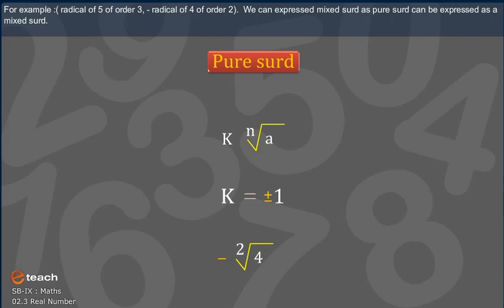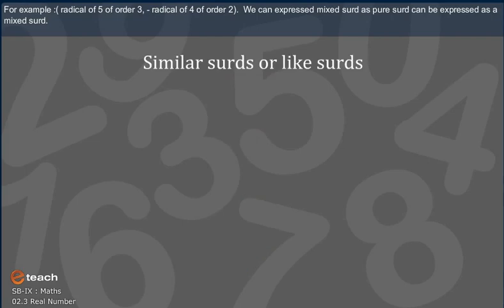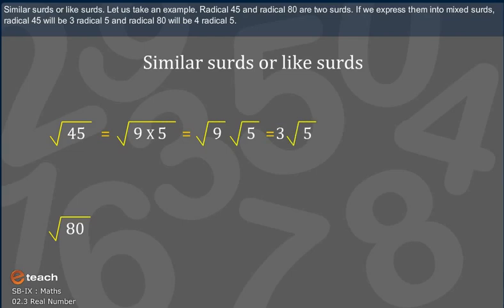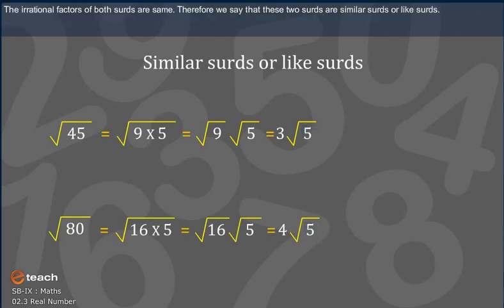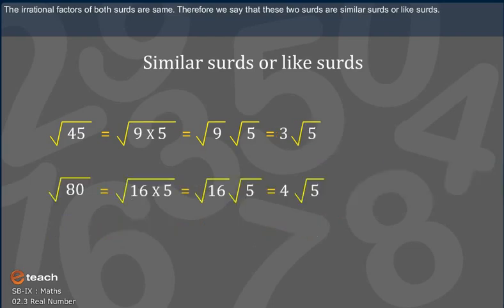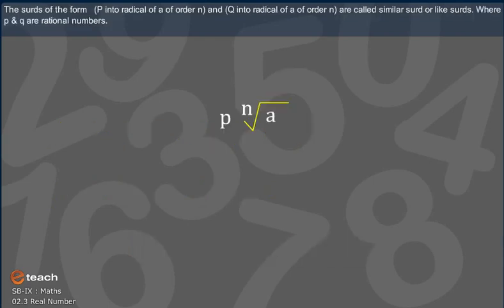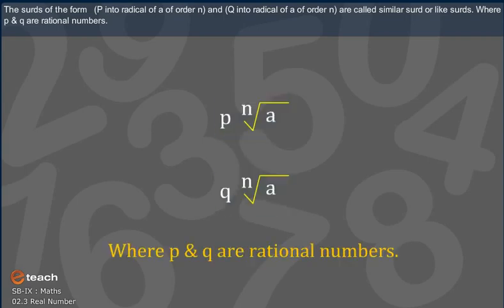We can express a mixed surd as a pure surd, and a pure surd can be expressed as a mixed surd. Similar Surds or Like Surds: for example, the square root of 45 and the square root of 80 are two surds. If we express them as mixed surds, root 45 becomes 3 root 5 and root 80 becomes 4 root 5. The irrational factors of both surds are the same. Therefore, these two surds are called similar surds or like surds. Surds of the form p times the nth root of a and q times the nth root of a are called similar or like surds, where p and q are rational numbers.